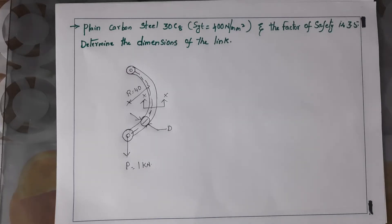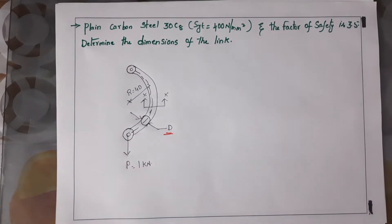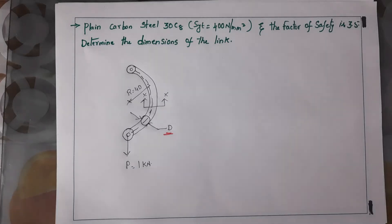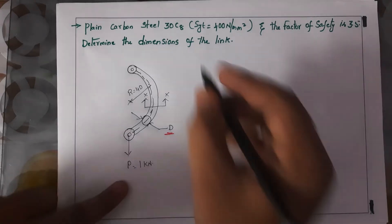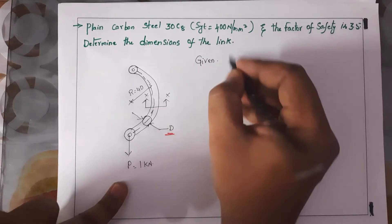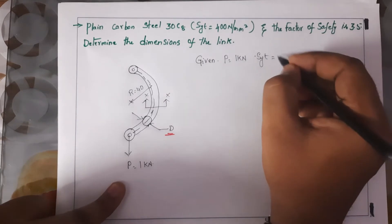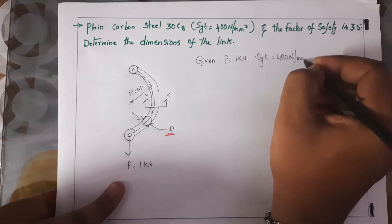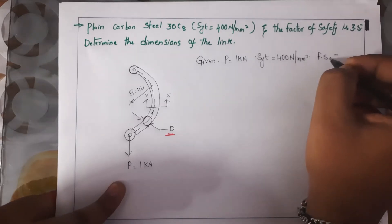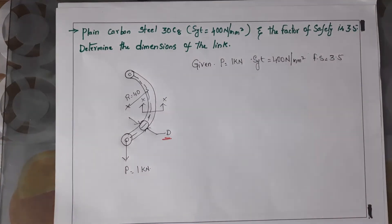Hello everyone, here is the problem on curved beams. You can see a beam which is in curved shape and we have been asked to find out the dimensions. A plain carbon steel of 30C8 having a tensile stress of 400 newton per mm² and a factor of safety of 3.5 — determine the dimensions of the link. The given data: load = 1 kilonewton, limiting tensile stress = 400 N/mm², factor of safety = 3.5.